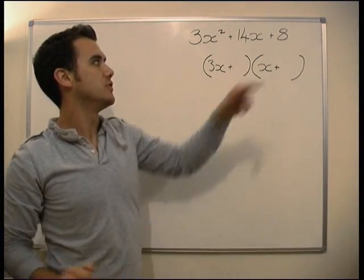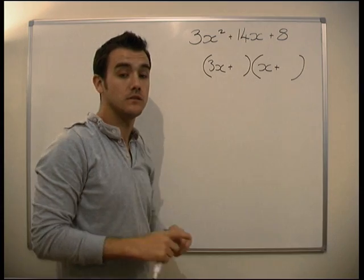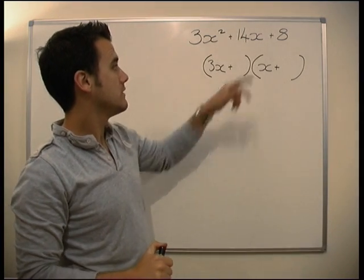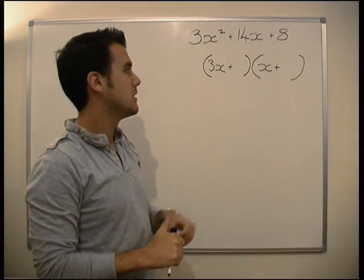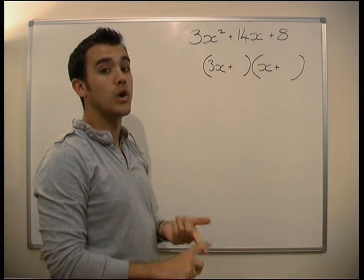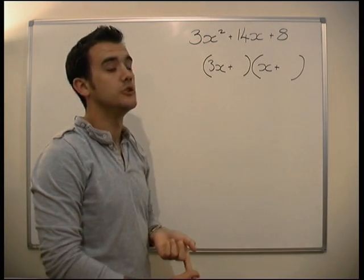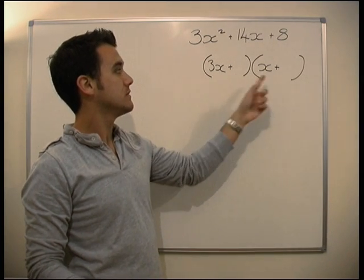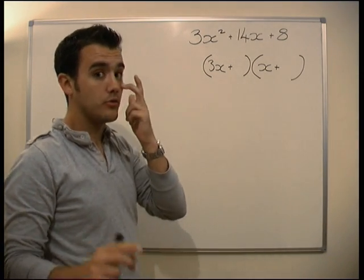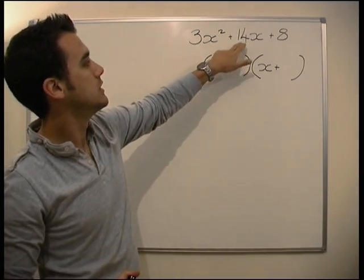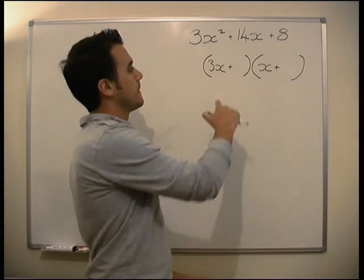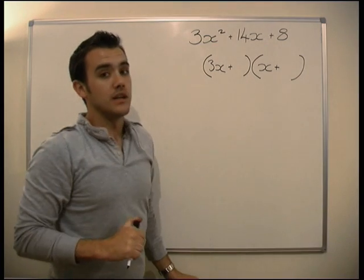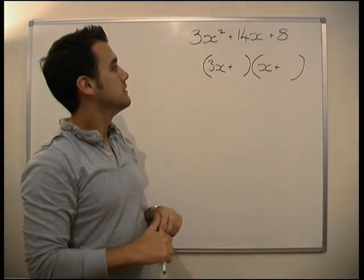Now we need two numbers that times together to make 8 and we need to get a 14. Two numbers that times together to make 8 - 1 and 8, or 2 and 4. Let's think about it. We need 3x times something, it's probably going to be a 2 and a 4 to get us to a 14. Which way round are they going to go? Things add together to make 14.